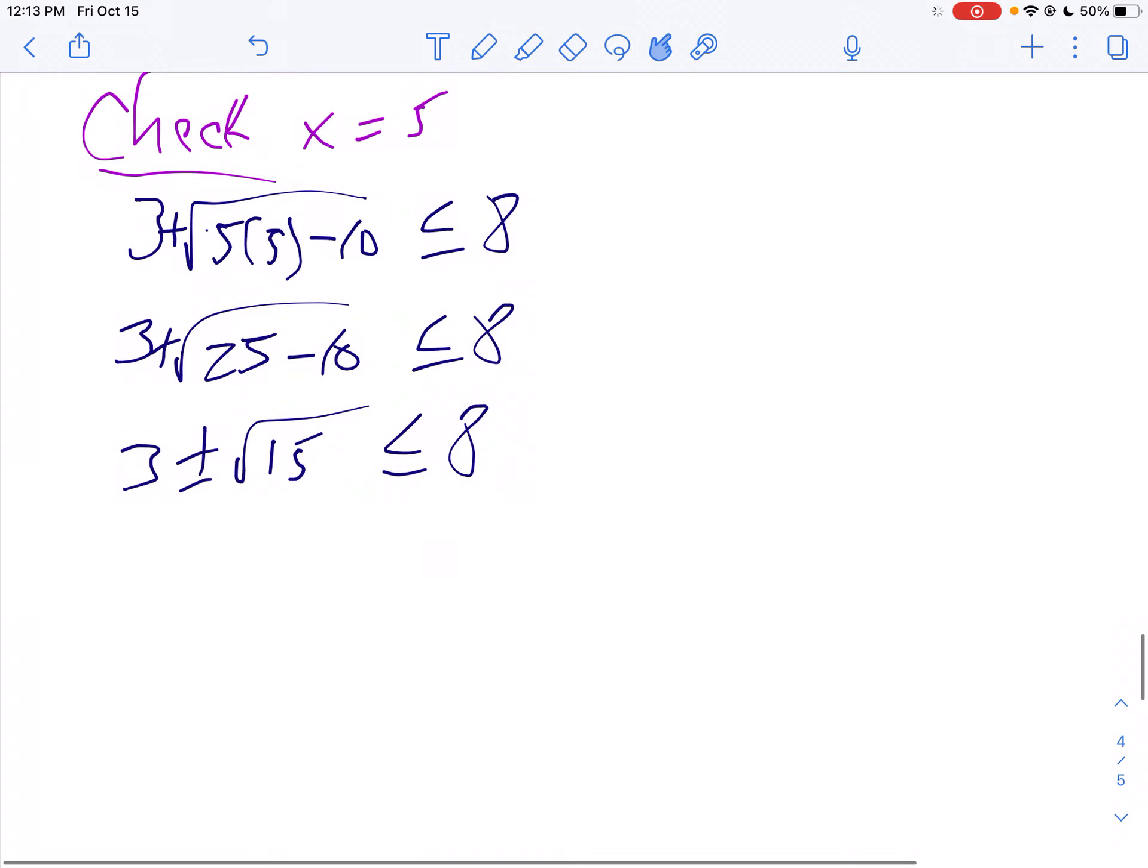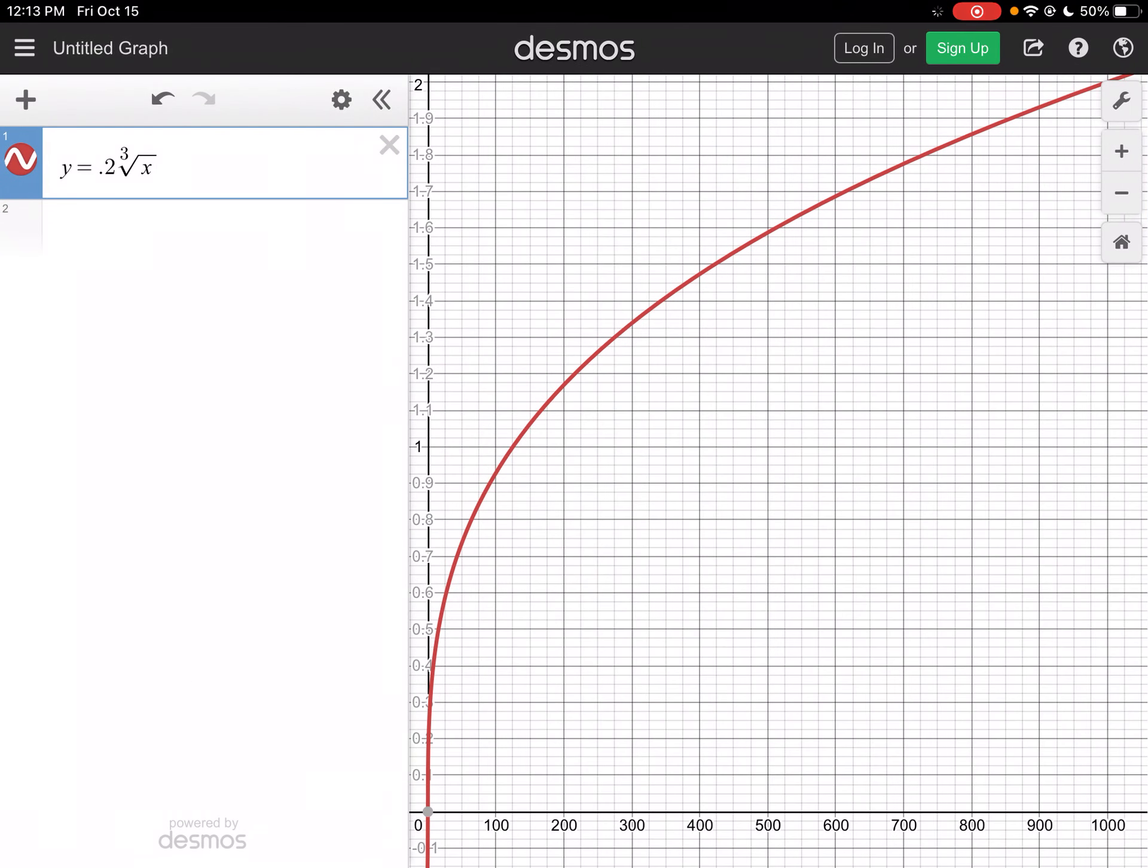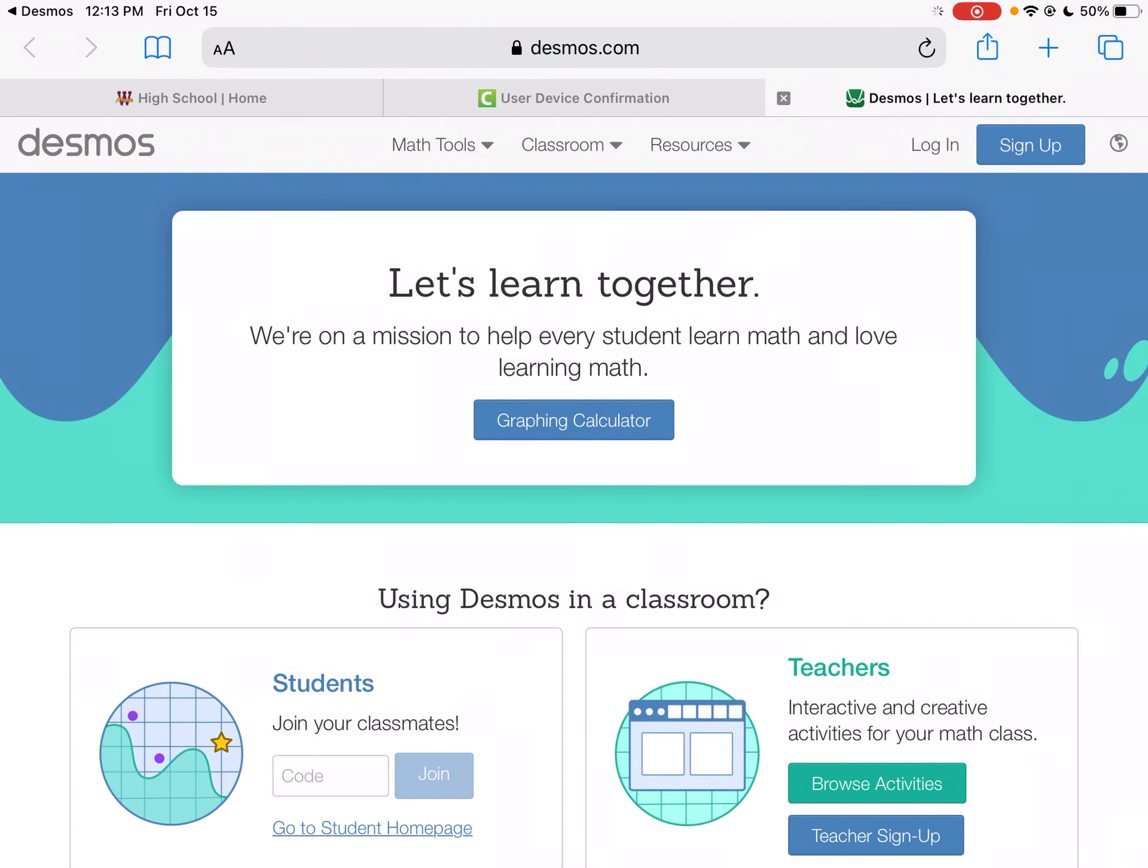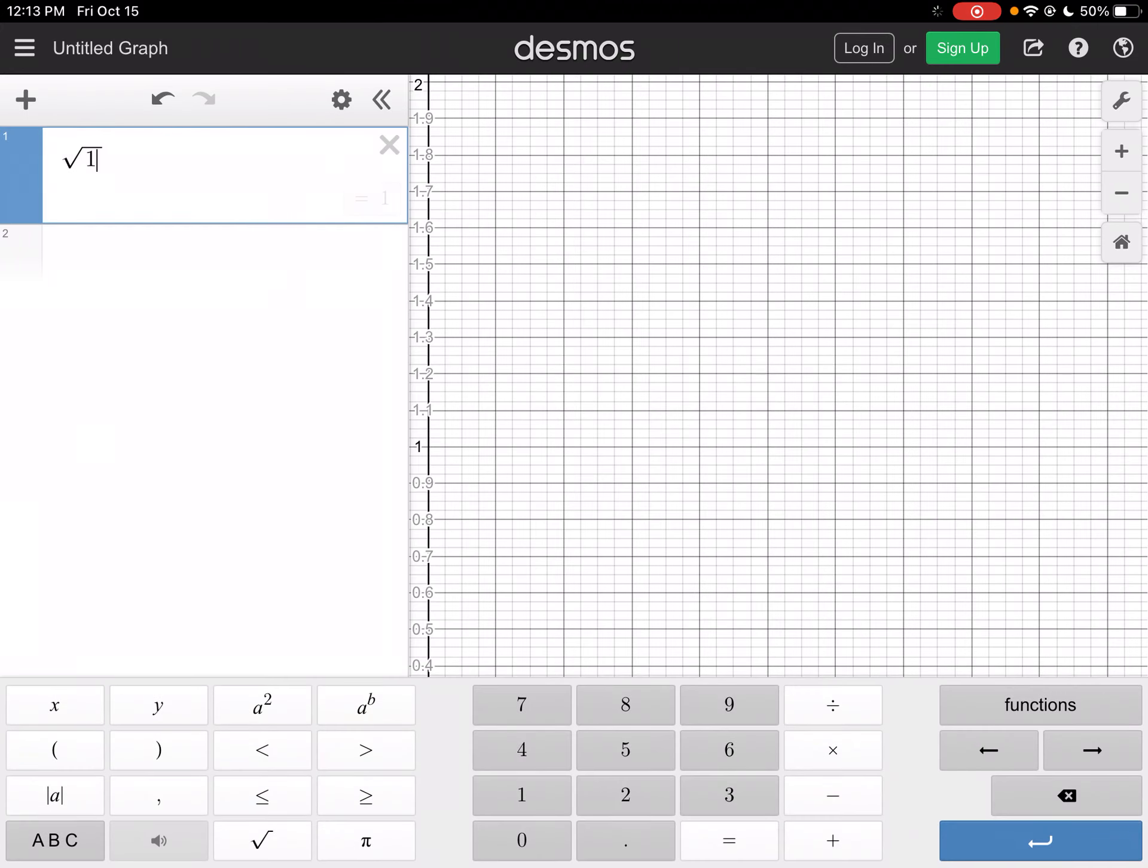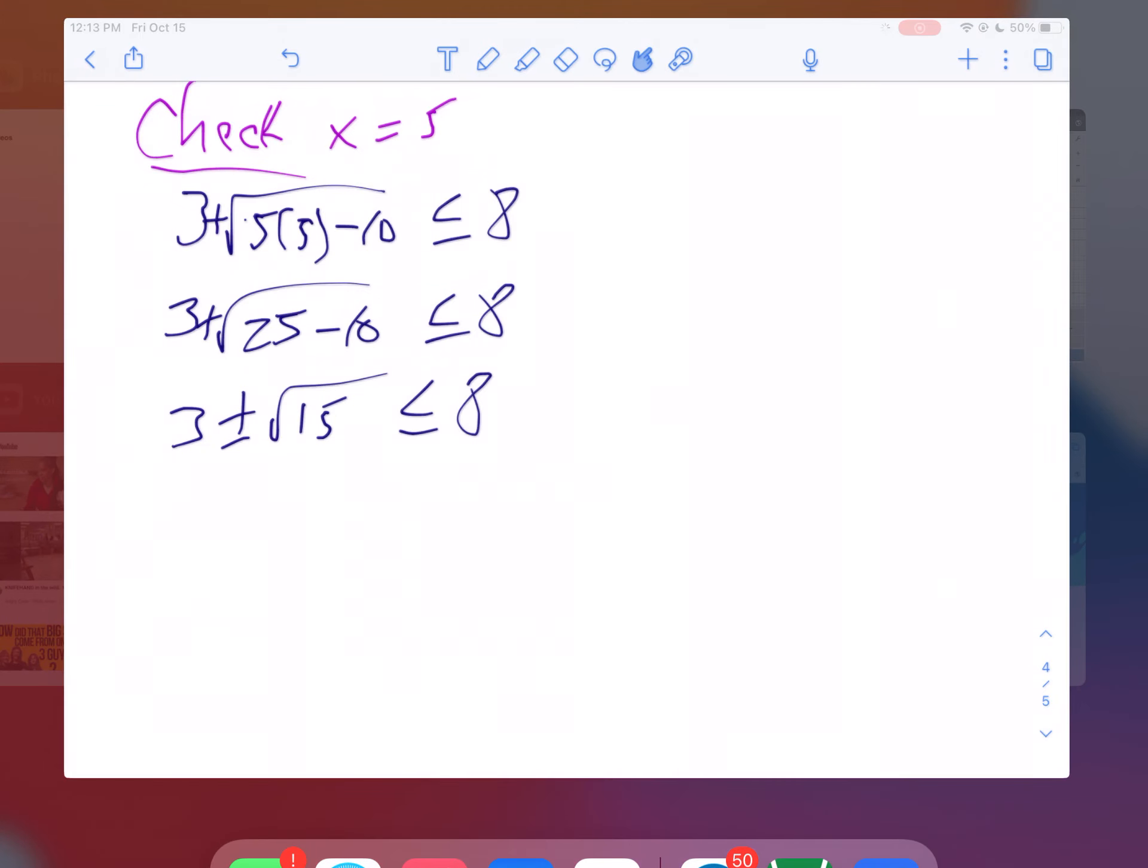If I want to compare these, I'll change the square root of 15 into a decimal. Taking the square root of 15, that's about 3.87.